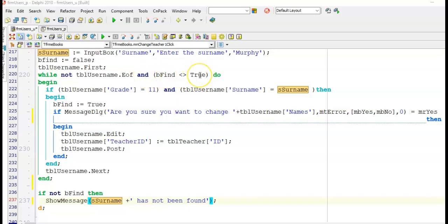So I will continue to loop while bFind is false. And then I have my usual dot first, while not end of the table. Very important that you have your dot next just before the end of your while.